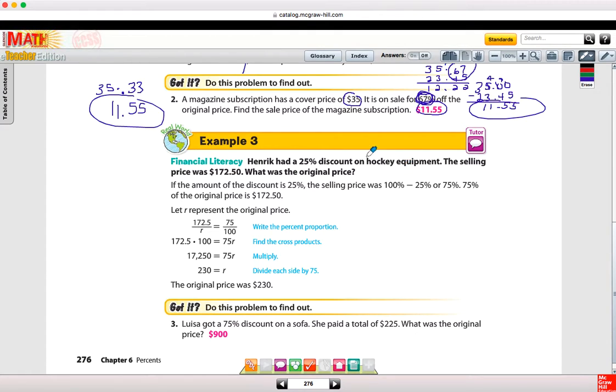Example three is talking about a discount and it's wanting to know what the original price was. We know it's a 25% discount and that the selling price was $172.50. In this case, it's saying the original price is R, the unknown. They're going back to that percent proportion that we learned back in lesson 6.1. $172.50 is the part. X, or in this case R, is the whole. 75% over 100. When you cross multiply, you get $172.50 times 100. And then 75 times R. Divide both sides by 75, and we get that the original price was $230.